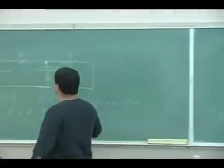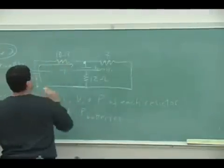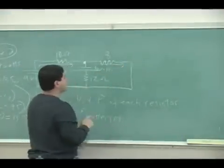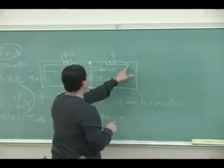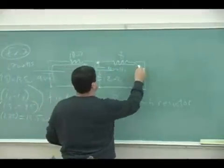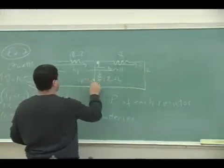So I'm gonna have current come in this way and then breaking up. You can decide that you want this to be I2 or you want this one to be I2. It doesn't really matter. In this case, I could make this I2 and I can make this I1 minus I2.